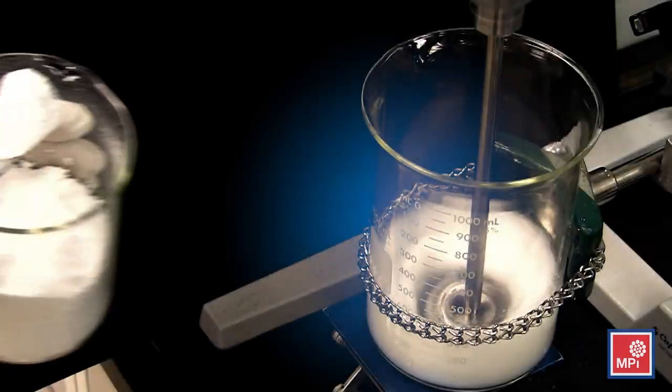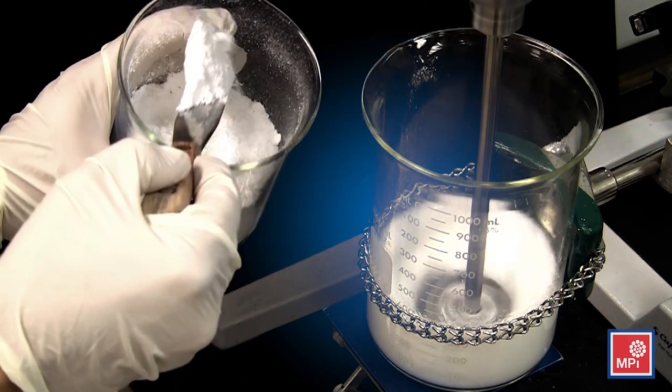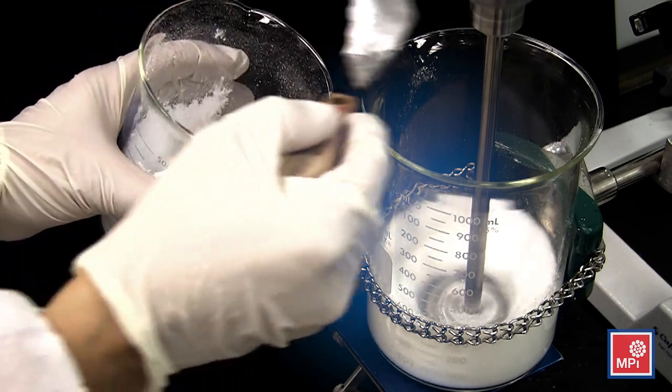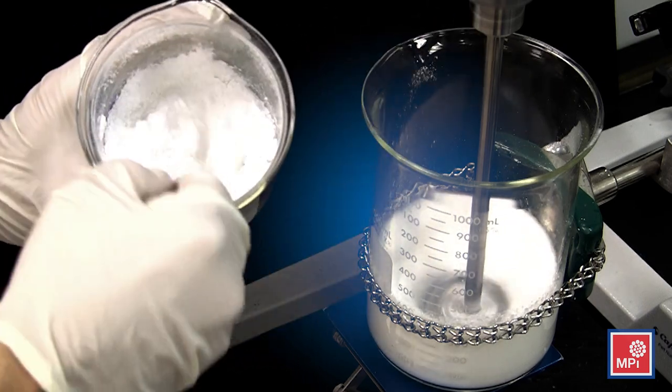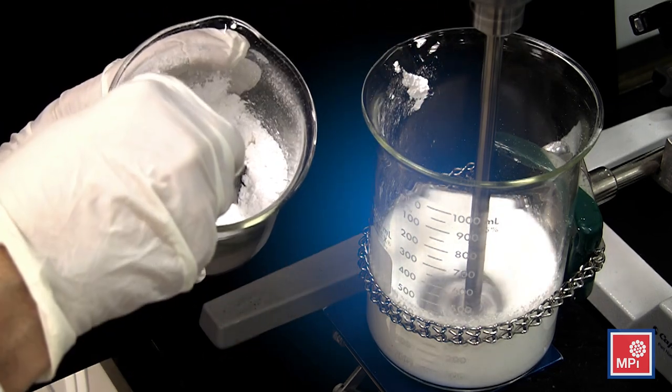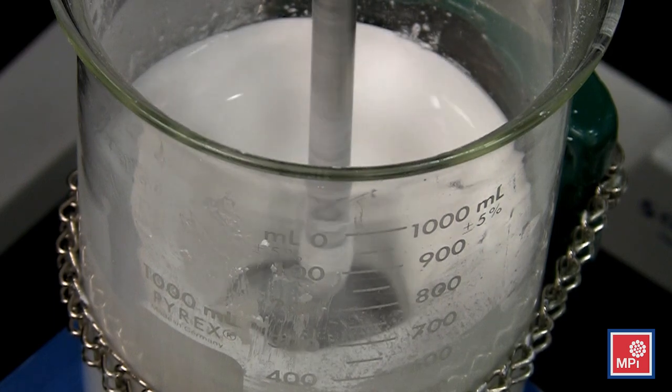After three minutes of mixing at 1000 revolutions per minute, we add the micronized wax. Once all the wax is added, we recommend increasing the mixing speed to 1600 revolutions per minute with a mixing time of 30 minutes.